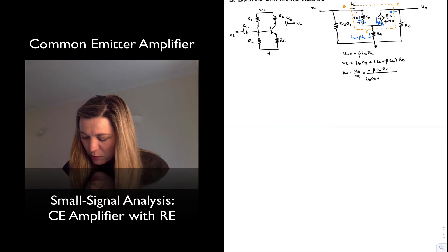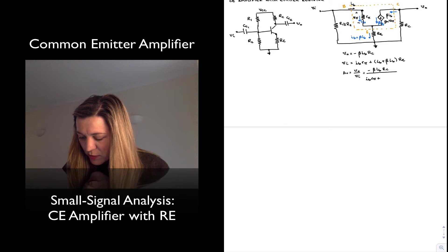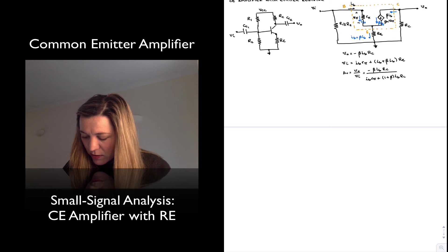I_B*r_pi plus, and I'm going to factor out I_B from this expression, so it's going to be (1 + beta)*I_B times R_E.